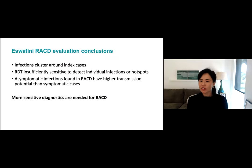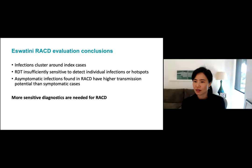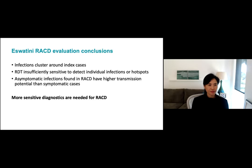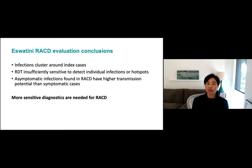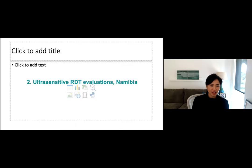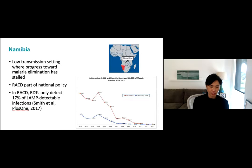To conclude that section: infections do cluster around index cases. We found that rapid diagnostic tests are insufficiently sensitive to detect infections and hotspots. We showed that asymptomatic infections have higher transmission potential than symptomatic cases. And we concluded that more sensitive diagnostics are needed. So in 2017, a new rapid diagnostic was developed and we did studies to evaluate it in Namibia, a similar low-transmission setting, where we had also shown that rapid diagnostic tests detect only a small proportion of the infections you'd detect by LAMP or PCR.